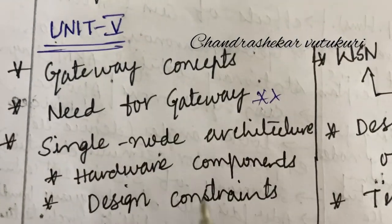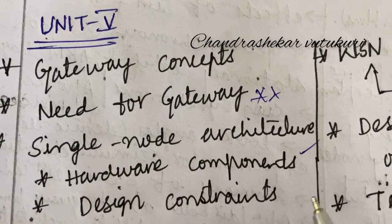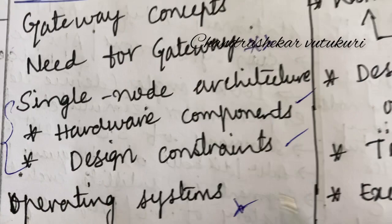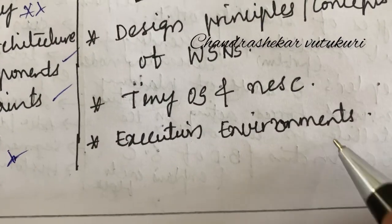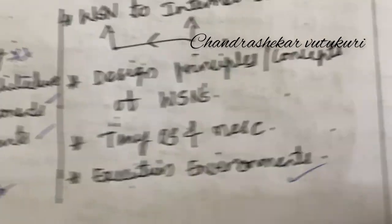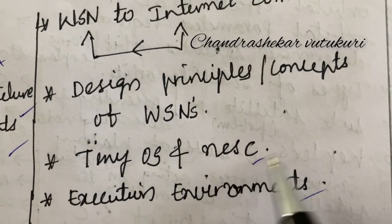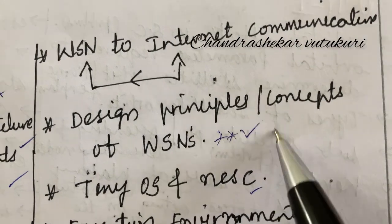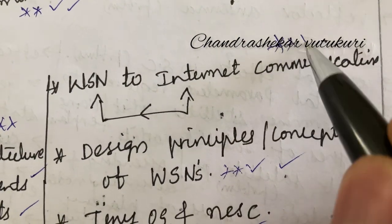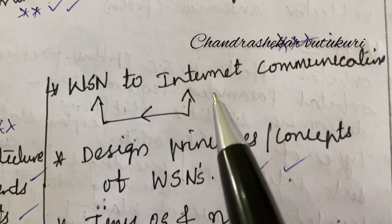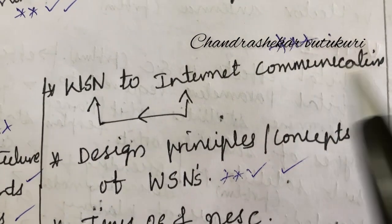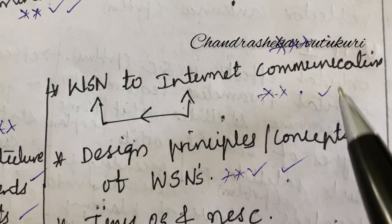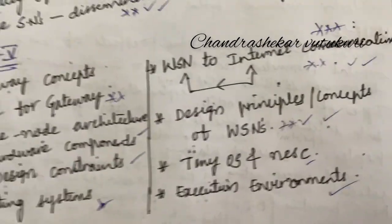Unit 5 is about gateway concepts — the need for a gateway is a short question. Single-node architecture related to hardware components and design constraints is a 10-mark or 5-mark question. Operating systems and execution environments related to gateway concepts, TinyOS, NSCSC, and design principles are top questions. Wireless sensor network to internet connection and vice versa is a compulsory important question in your paper.